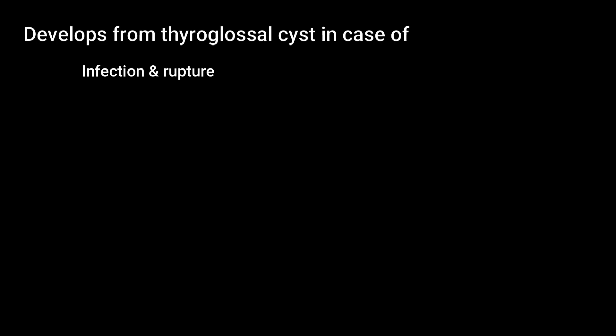Mind it, it is never congenital. So how is it developed? It develops from thyroglosal cyst. When there is infection of the thyroglosal cyst and it bursts open into the skin, then thyroglosal fistula develops.